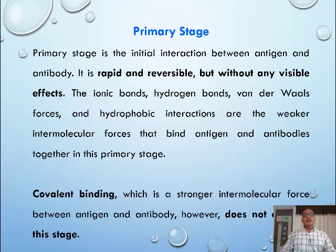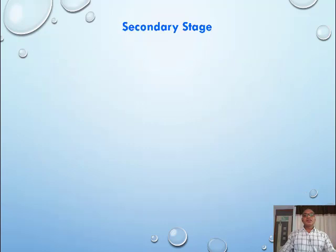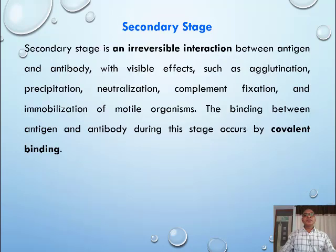Covalent binding, which is the stronger intermolecular force between antigen and antibody, does not occur in the primary stage. Secondary stage is an irreversible interaction between antigen and antibody with visible effects such as agglutination, precipitation, neutralization, complement fixation, and immobilization of motile organisms.